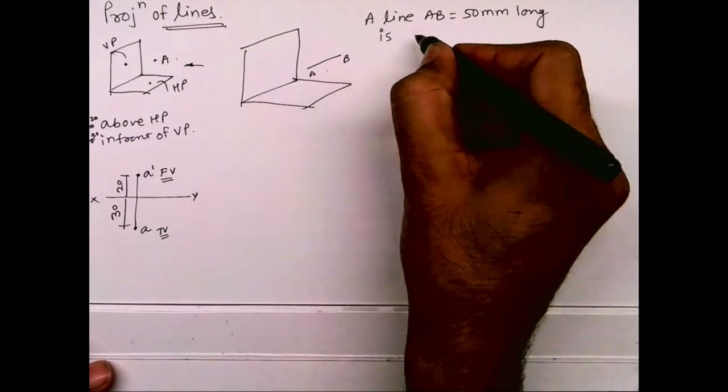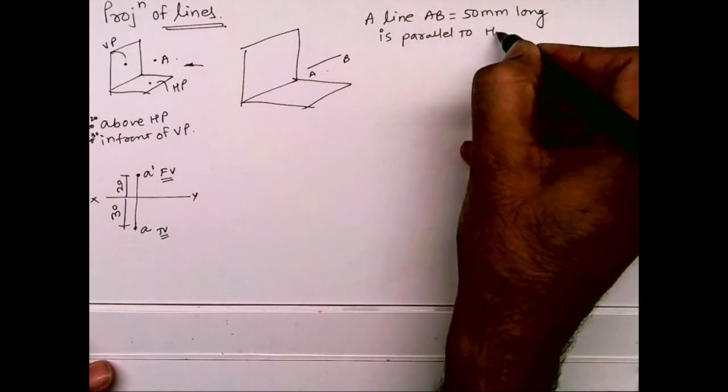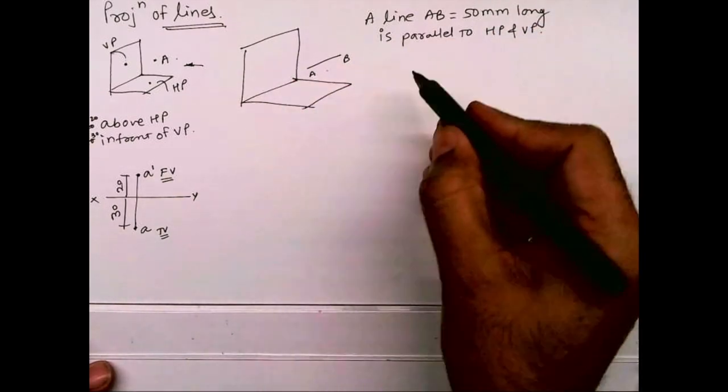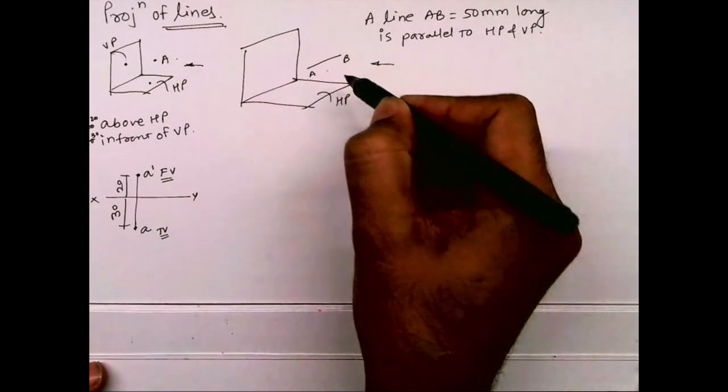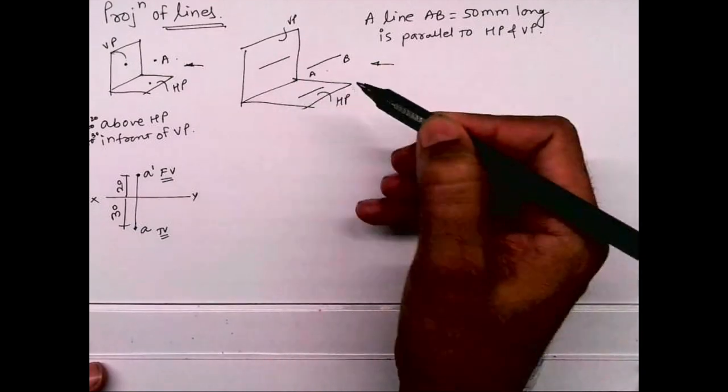It is parallel to HP and VP. So how will you draw this in orthography in 2D? Observer will see from here, this is HP, this is VP. So in front view he will see a line and in top view also you will see a line.